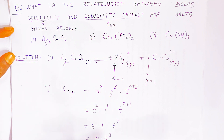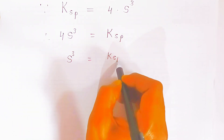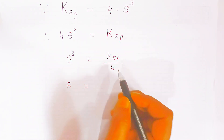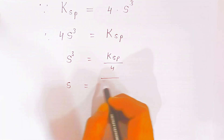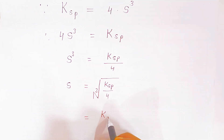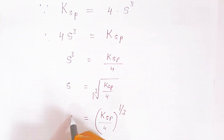Solving: 2² = 4, times 1, times S³ gives Ksp = 4S³. Vice versa, 4S³ = Ksp, so S³ = Ksp/4. Taking the cube root, S = (Ksp/4)^(1/3). This is the relation between solubility S and solubility product Ksp for silver chromate.